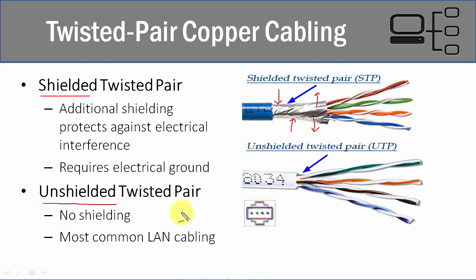Unshielded twisted pair is typically seen in network cabling runs from cubicle to cubicle where there's no other electrical cabling nearby. Shielded twisted pair is used where cable runs are close to other electrical equipment or cables — for example, running cables from an electrical closet up through the ceiling alongside electrical lines.